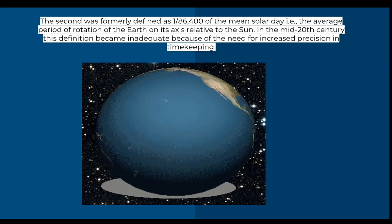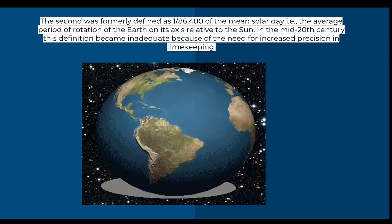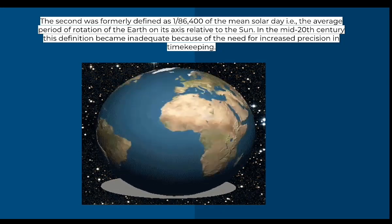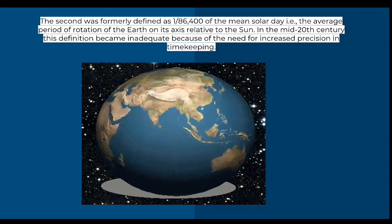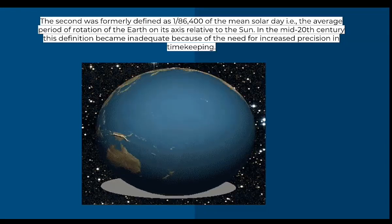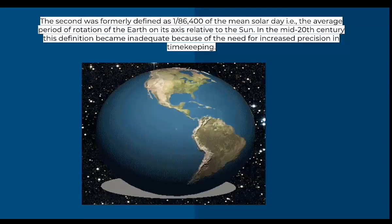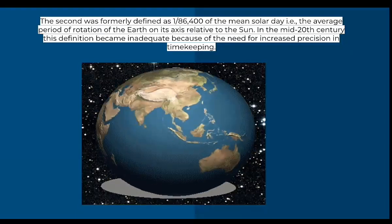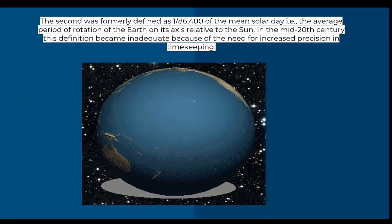The second was formally defined as 1/86,400 of the mean solar day, the average period of rotation of Earth on its axis relative to the Sun. In the mid-20th century, this definition became inadequate because of the need for increased precision in timekeeping.